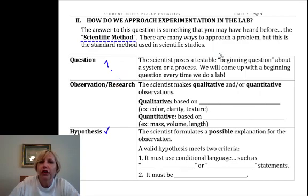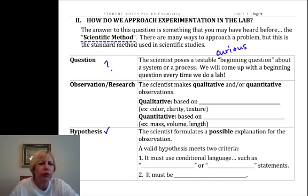You have to be curious to be a good scientist. You want to look around you or read articles and be continually asking questions. Why? What happens if? Mr. Coder will do that. He'll say, you know, what happens if we did this? And my response is typically, I don't know, let's try it. Because that's part of the fun of being a chemist. So we want to start with a question.